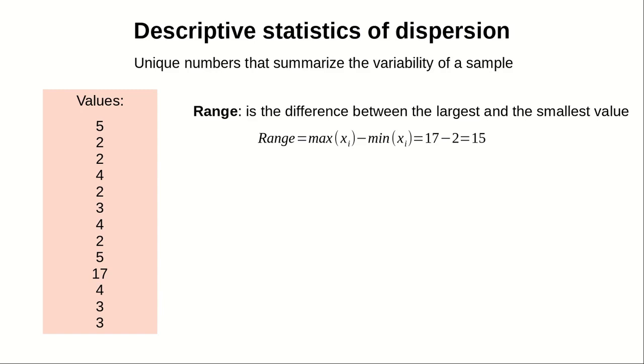What is the range? Well, it's the difference between the largest and the smallest value. In this example here, if we take 17, which is the largest, and we subtract 2, we get 15. So we can say that this sample has a range of 15.